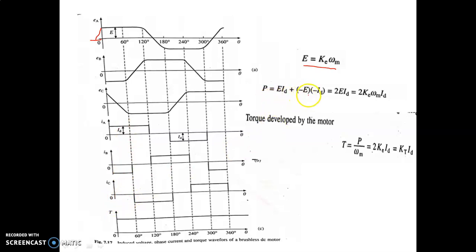The instantaneous power is: e·ia + (−e)·(−ia) = 2e·ia. Since EMF e = k·ωm, the torque developed equals power divided by ωm. Therefore, torque T = 2k·ia, meaning torque is directly proportional to the phase current ia. The EMF is proportional to speed, and torque is proportional to current.